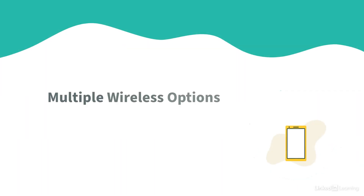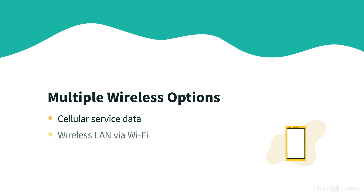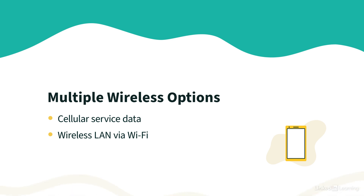Or we have cellular services that support data transmission, and we have widespread coverage of cell signals. For example, consider a cell phone. My cell phone can send and receive data using cellular service, but if I'm in an environment that has a wireless LAN, I can connect to that network using this phone's wireless capabilities. So some devices, like this cell phone, they have more than one wireless option.